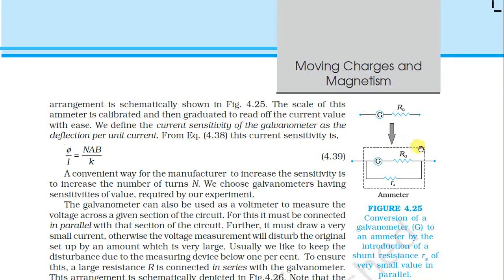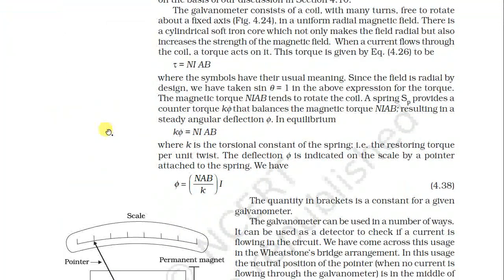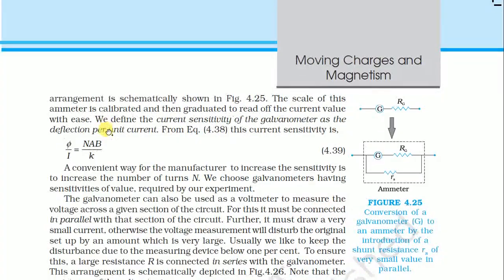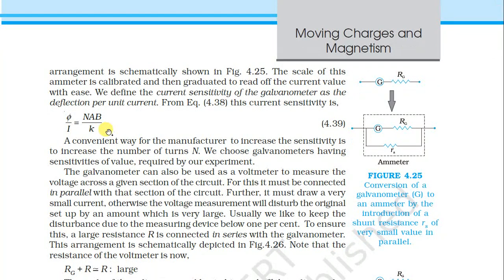The scale of the ammeter is calibrated to read the current value. We define the current sensitivity of the galvanometer as the deflection per unit current. From the equation, φ/i = NAB/k, where N is the number of turns, A is the area, B is the magnetic field, and k is the torsional constant. A convenient way for manufacturers to increase sensitivity is to increase the number of turns N.